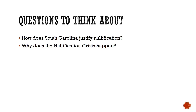Recapping our questions to think about: How does South Carolina justify nullification? South Carolina brings back the compact theory of government — if the states had given power to the national government and created it, then nullification would be allowed. And why does the nullification crisis happen? It happens because South Carolina is challenging the authority of the U.S. government, not just over the tariff, but also because of the institution of slavery — they're worried that the national government might abolish slavery and there would be nothing South Carolina could do about it. Stay tuned for part two.